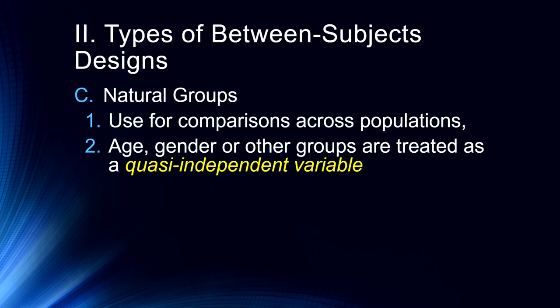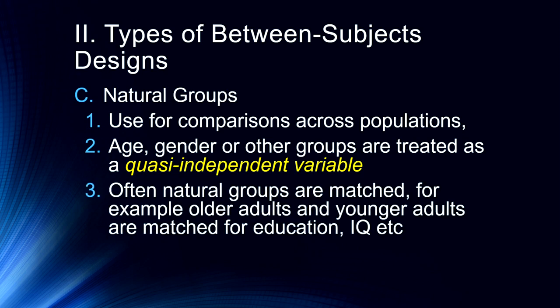But the idea here is we're using some sort of existing group as our quasi independent variable. It's not an independent variable because we're not manipulating any of these things. We can't make people older just because we want to randomly assign them to conditions. So we use this as a quasi independent variable. And in our statistics it's treated as an independent variable. Now often if we're going to do a natural groups design we might want to match them. So if we have older adults and younger adults we might want to try to match them based on education, their IQ, or working memory ability. Depending on what we're interested in studying we might try to match them. And so these are a couple of ways in which we can look at existing group differences.